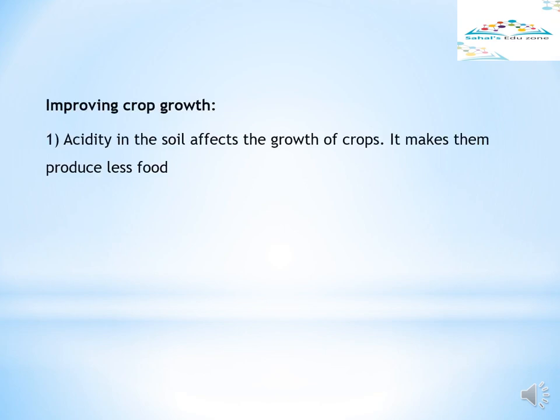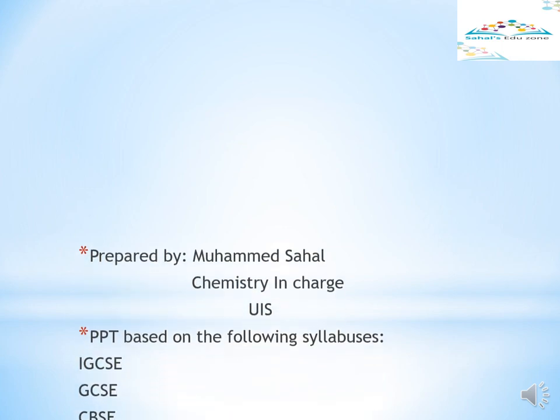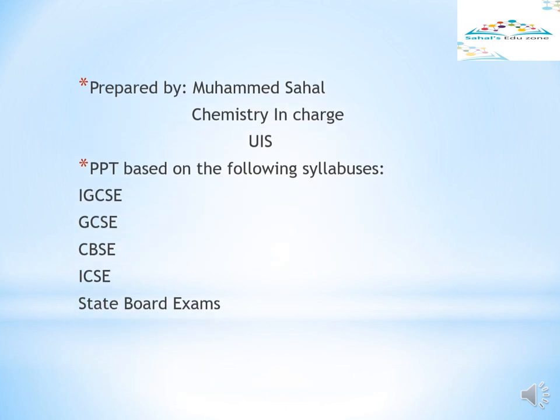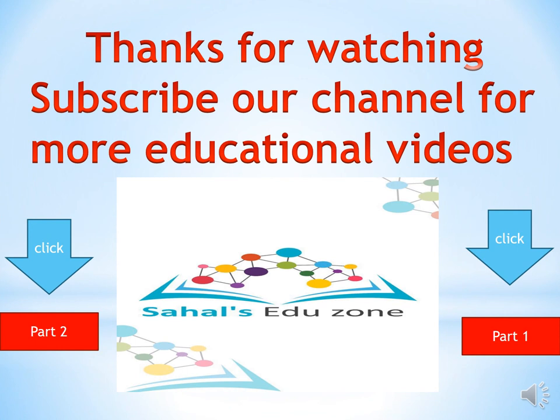Improving crop growth. Acidity in the soil affects the growth of crops and makes them produce less food. Lime, calcium hydroxide, is used to neutralize acidity in soil. When this lime is applied to a field, it makes the field appear temporarily white in color. Thanks for watching.